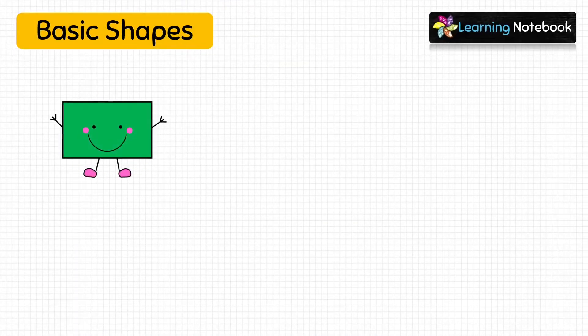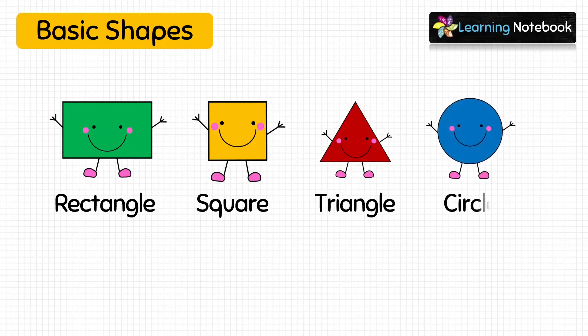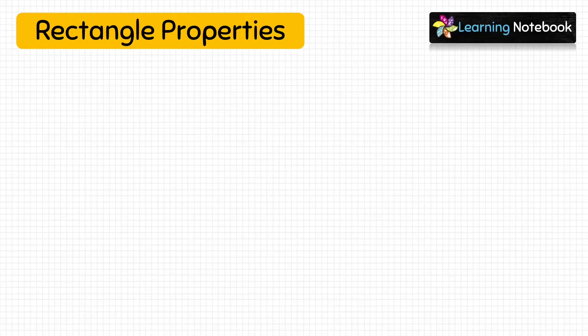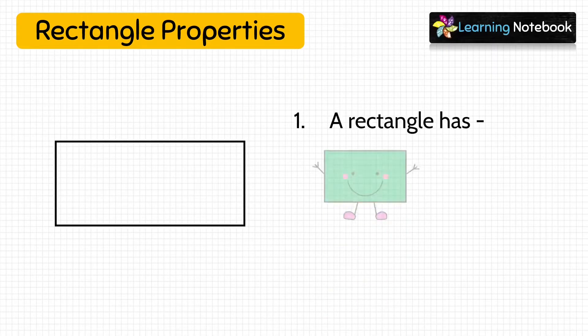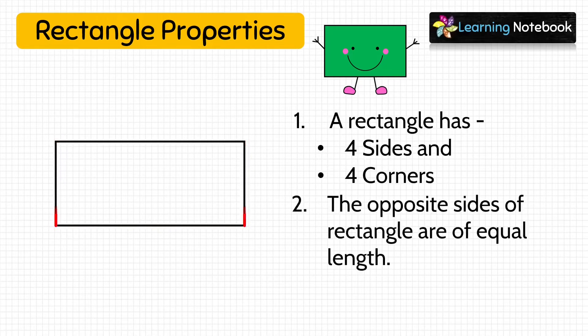Let's first learn about basic shapes. There are four basic shapes: rectangle, square, triangle, and circle. Let's discuss these basic shapes one by one. First is rectangle. This is a rectangle. A rectangle has four sides and four corners. Remember that opposite sides of a rectangle are of equal length.